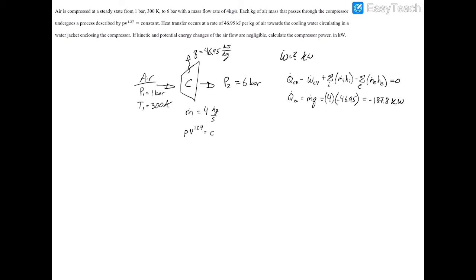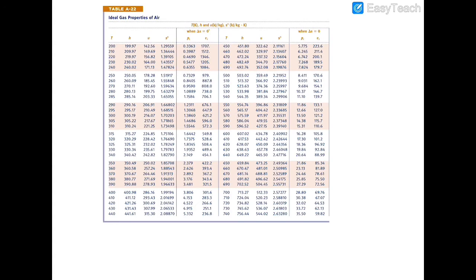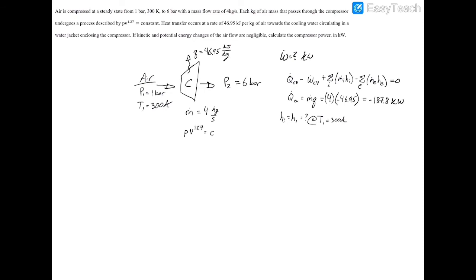Now, we have to find the specific enthalpy at the inlet. At 1, at the inlet, or H1, how can we find that? Well, we have that T1 is equal to 300 Kelvin. And at 300 Kelvin, we can turn to our property table, A22. We're looking at air right here, so ideal gas properties of air. You go to temperature of 300 degrees, and you have a specific enthalpy of 300.19. So we have H1 is equal to 300.19, and that's kilojoules per kilogram, as stated by the table.